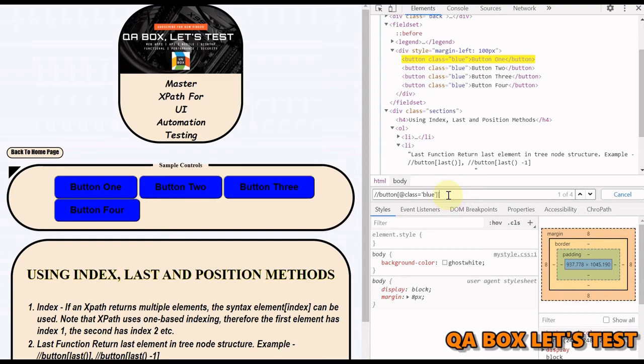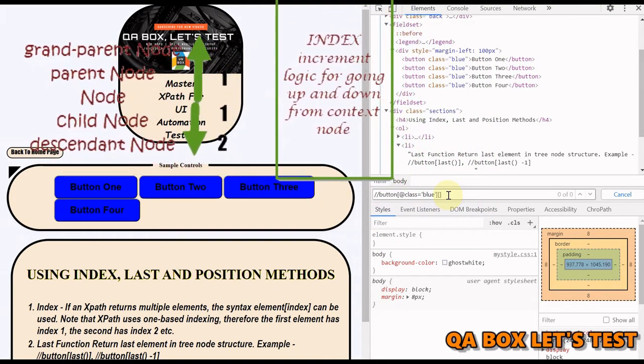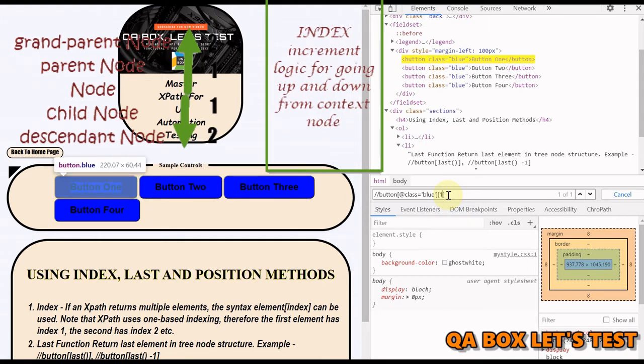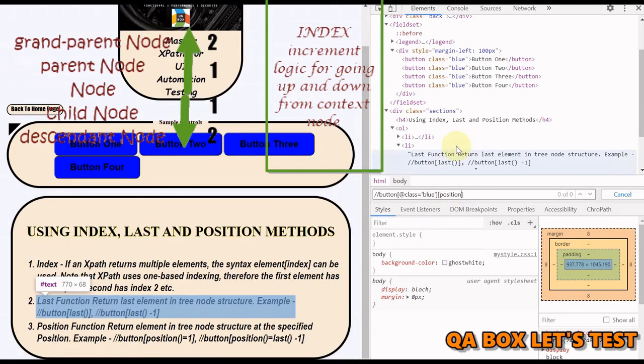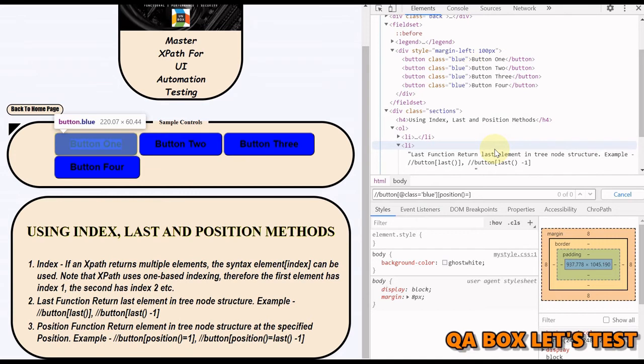But I want to find out the first button. How can I find that? I can use square brackets and say 1, so it is going to select the first button element. This is how we are going to do that. We can also specify position, because this is an abbreviation of position. So we can say position() equals 1, and you can see that the result is still the same.